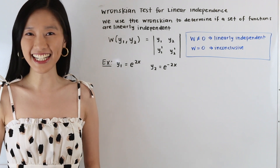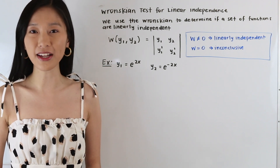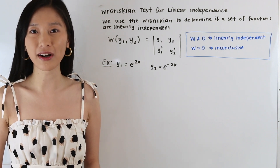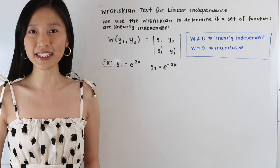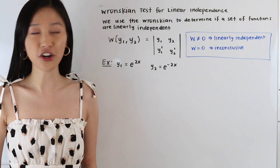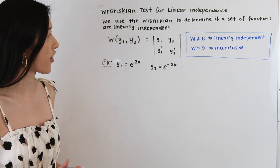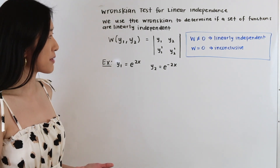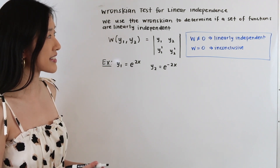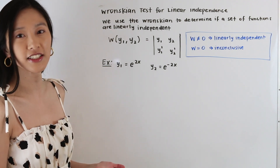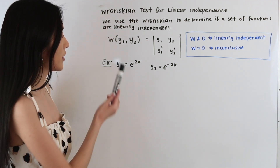Hey guys, Janine here, and in today's video we are going to be learning about the Wronskian test for linear independence. We use the Wronskian to determine if a set of functions are linearly independent, and when we are dealing with a set of two functions, the Wronskian takes the following form.